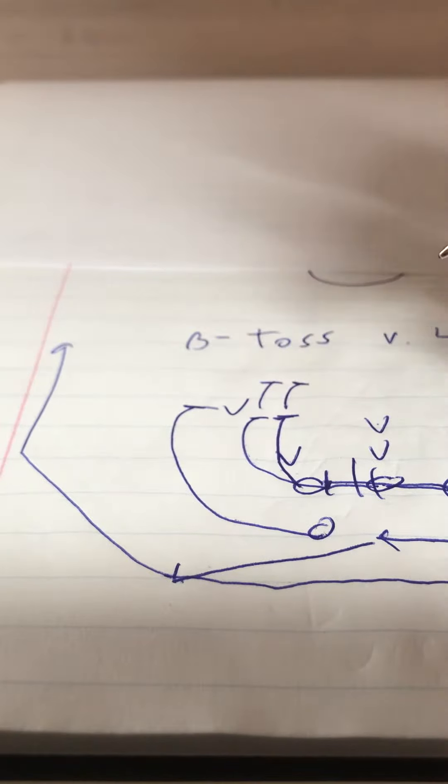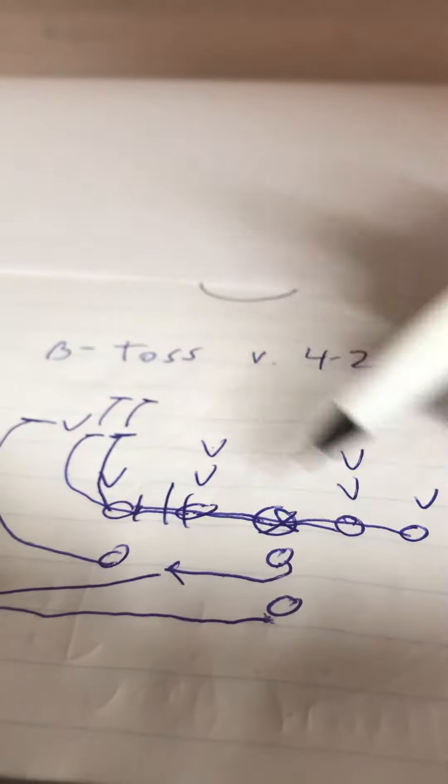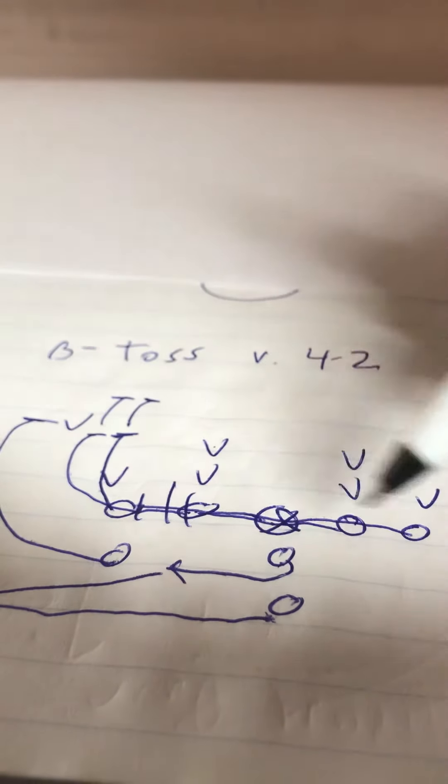So you want to run the B-back toss to get numbers and angles at the point of attack when you don't get four yards on the give phase of triple. Because if they don't let you go inside, you've got to go outside. That's straight from Coach Paul Johnson.